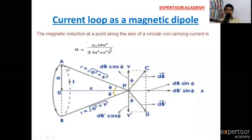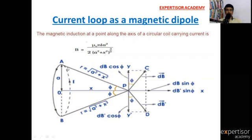Look at this — this is the current carrying loop. This loop contains two opposite fields, a and b. The radius of the current carrying loop is small 'a', and i is the current flowing through this loop.